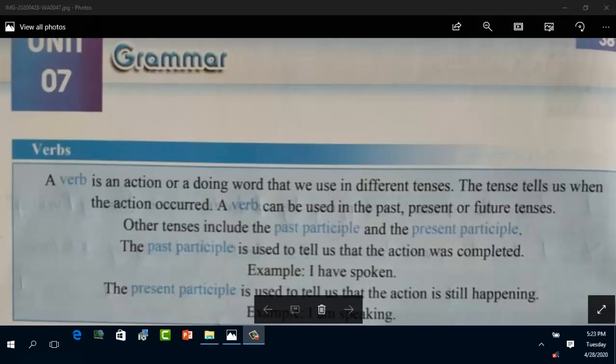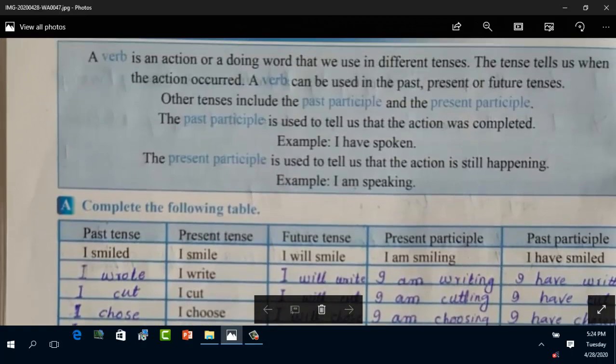Other tenses include the past participle and the present participle. Past participle is actually the third form of work, and present participle is actually the fourth form, that is the -ing form of the work. The past participle is used to tell us that the action was completed, for example 'I have spoken.' The present participle is used to tell us that the action is still happening, for example 'I am speaking.'